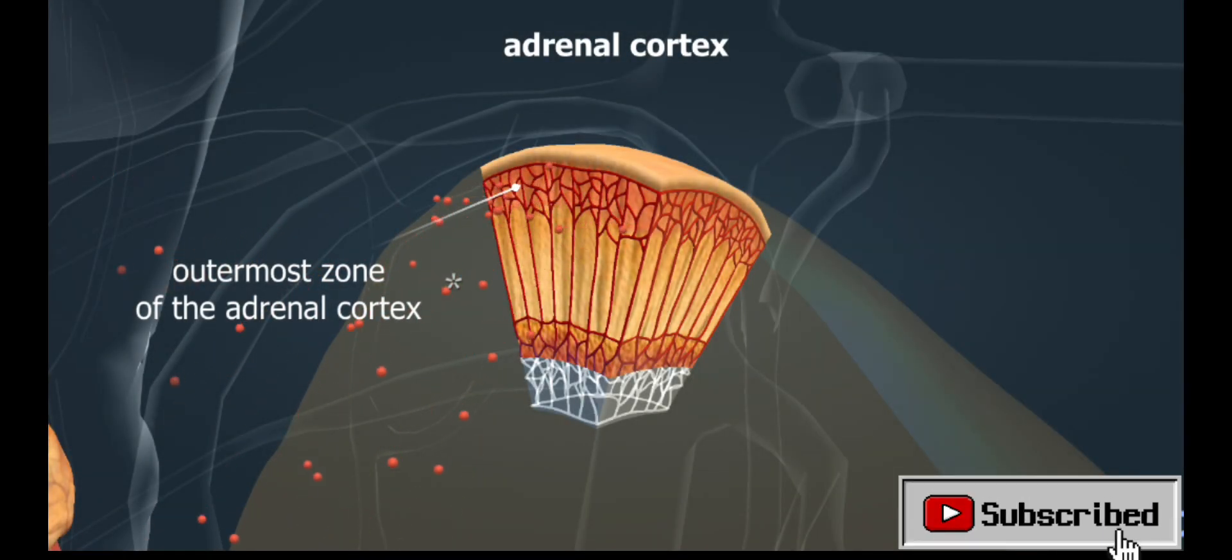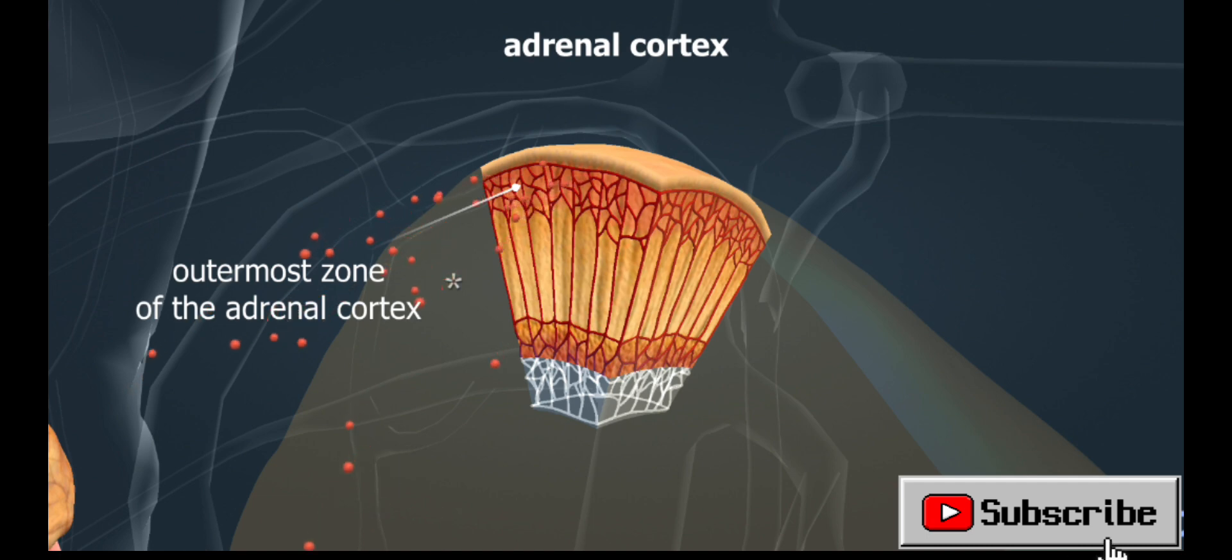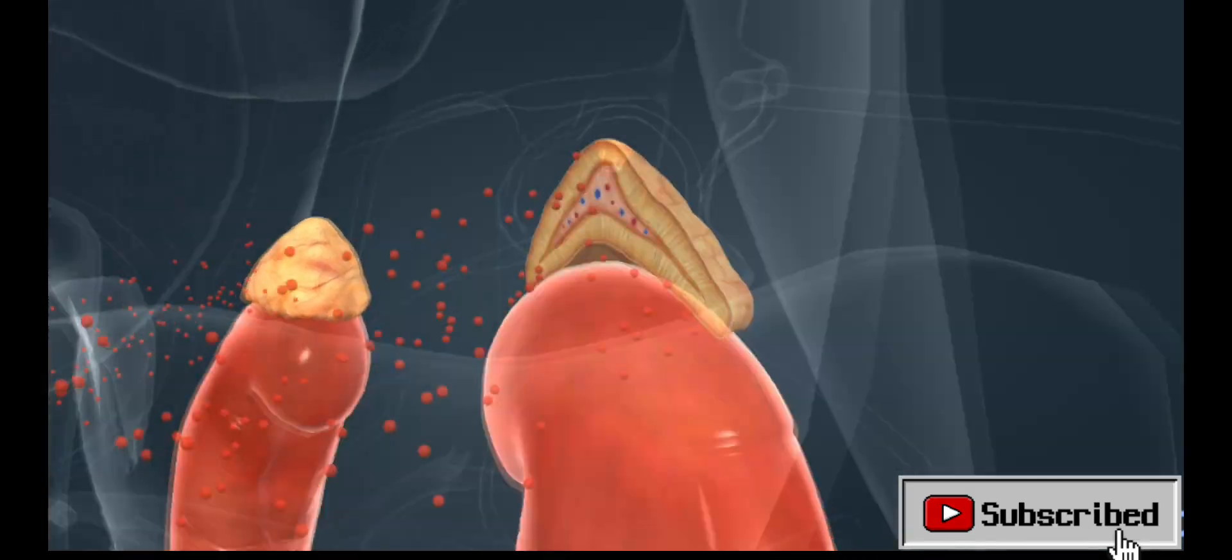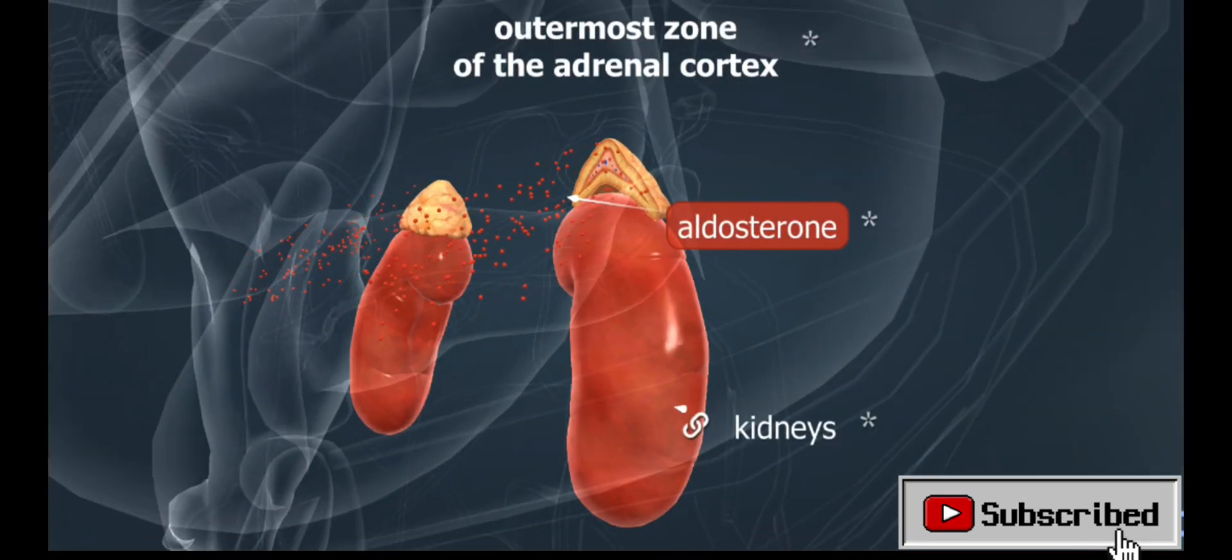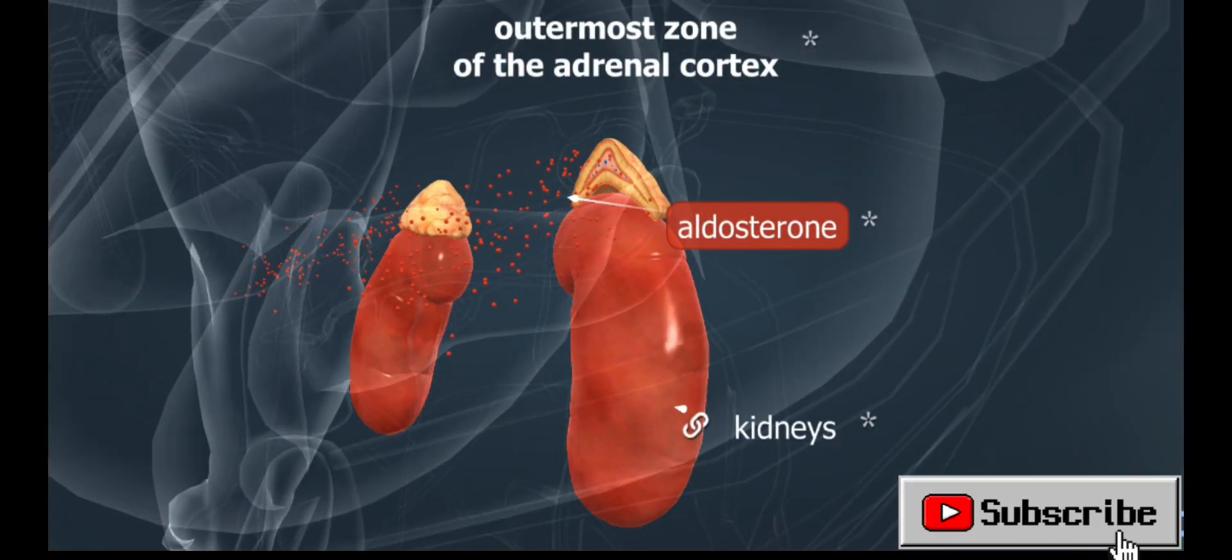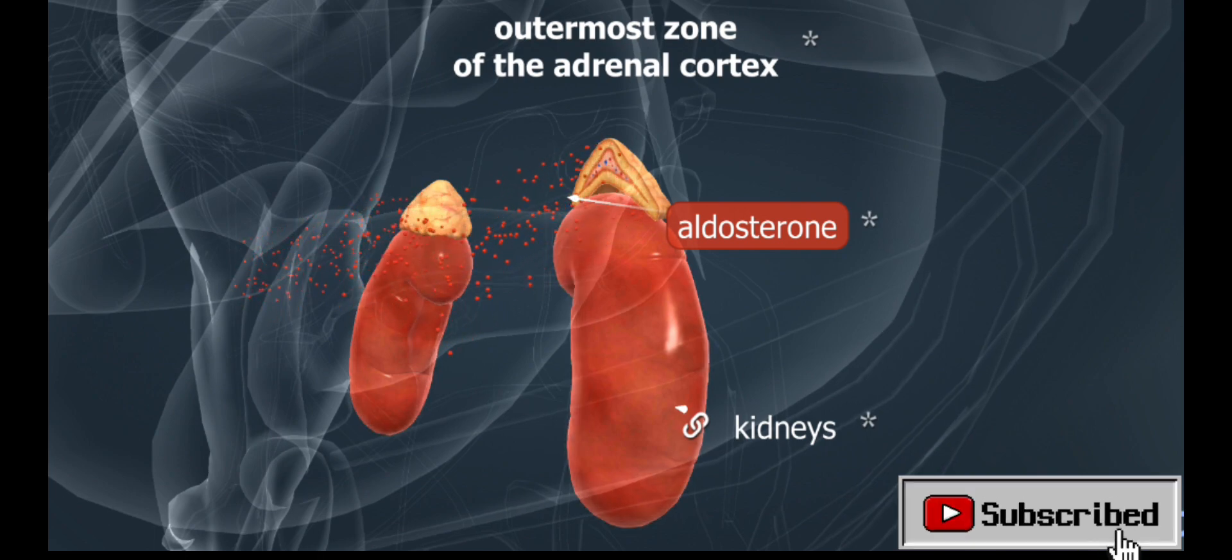The adrenal cortex consists of three zones. Each of the zones produces steroid hormones that play different roles in the body. The hormones produced in the outermost zone, for example aldosterone, regulate the sodium level in the blood by promoting the reabsorption of sodium in the kidneys.